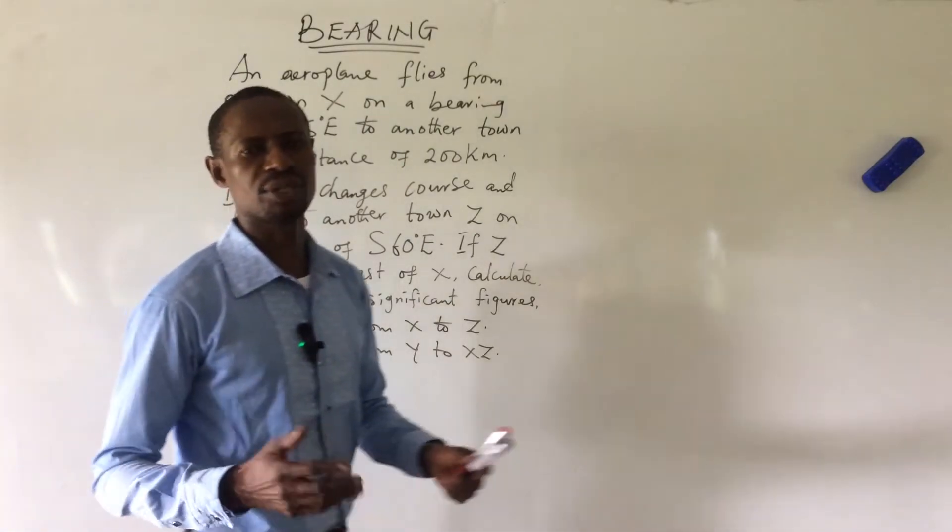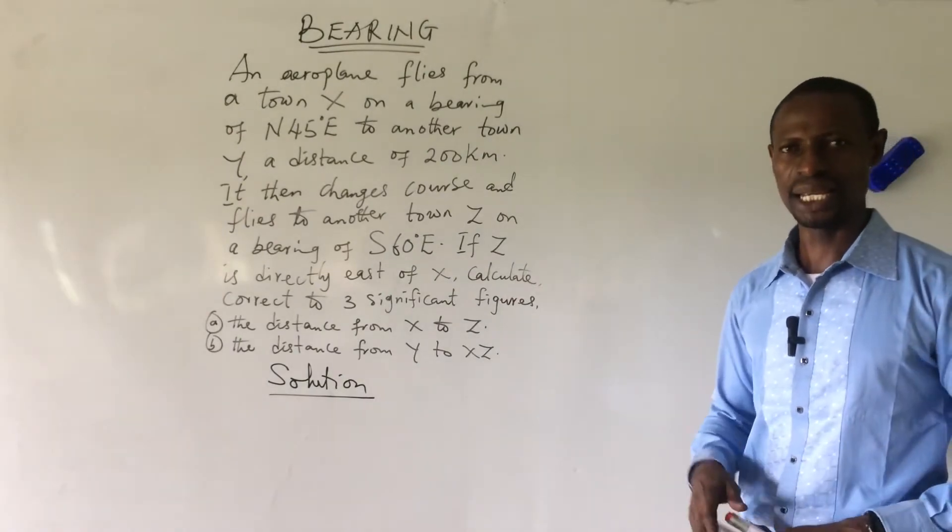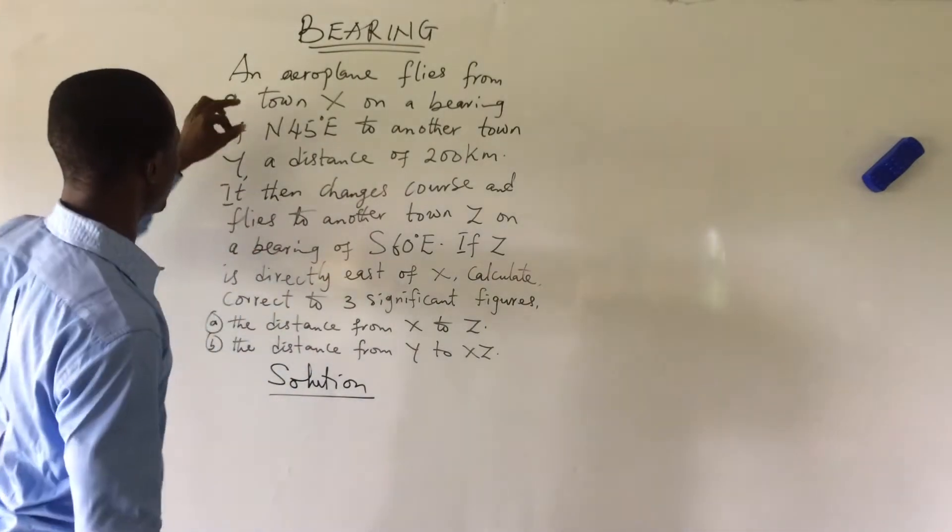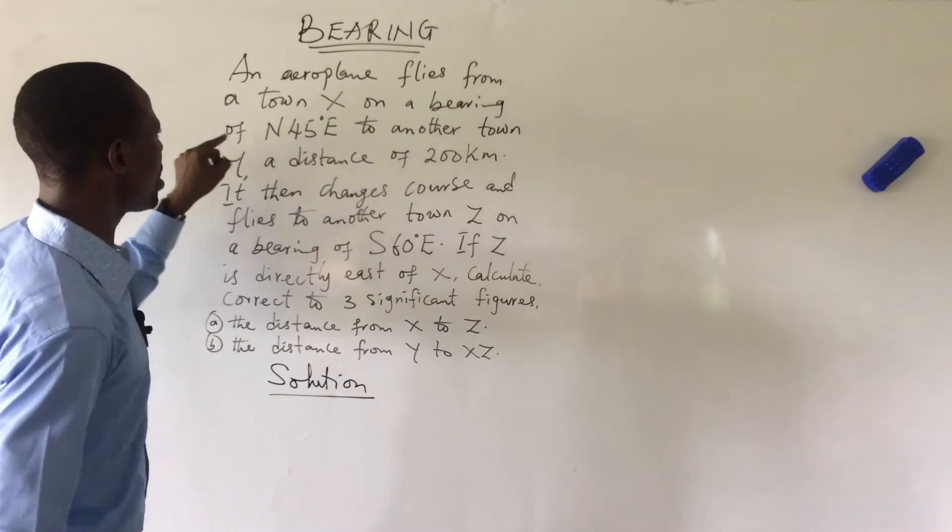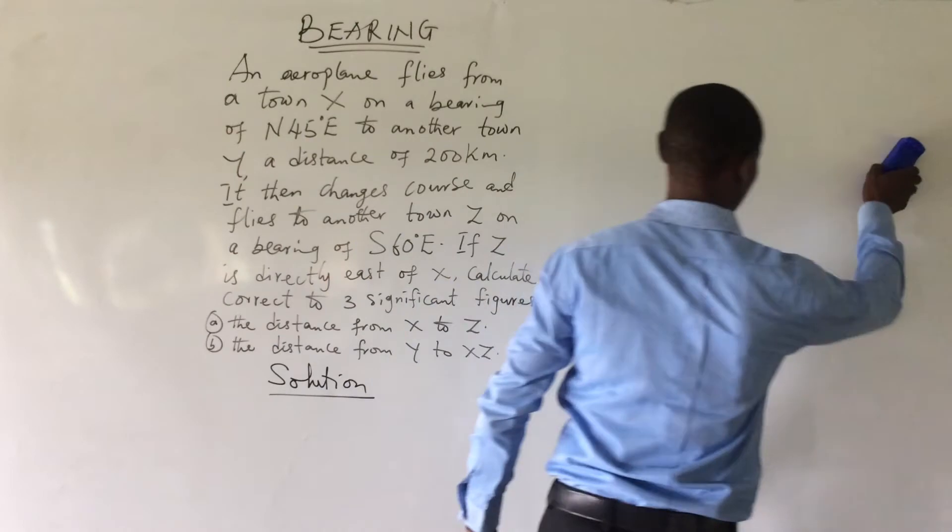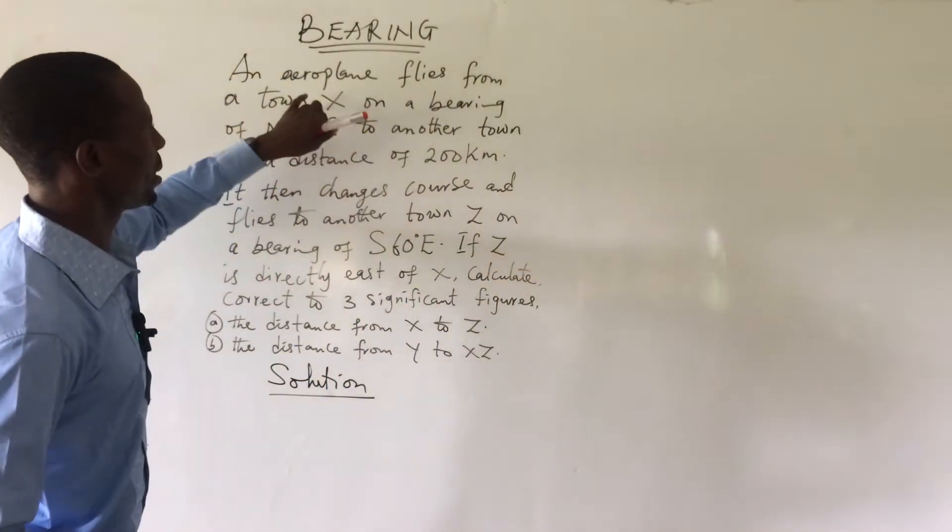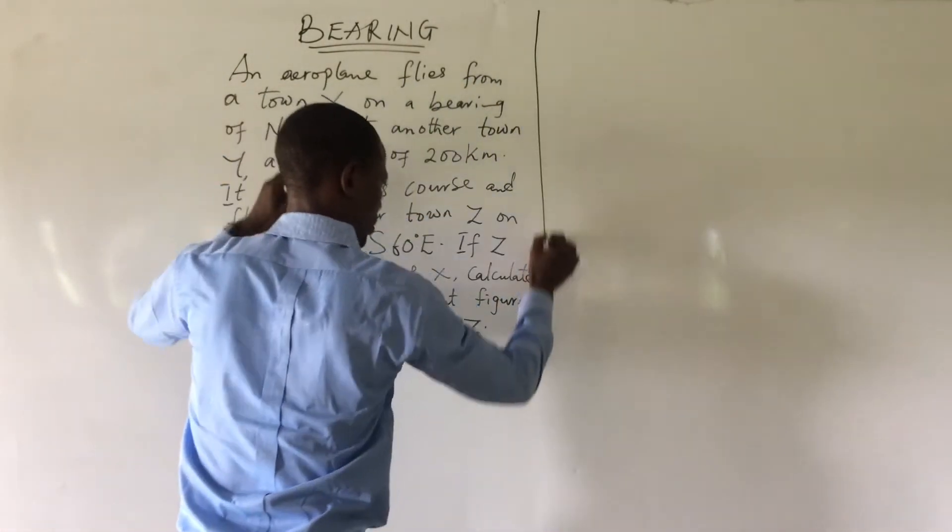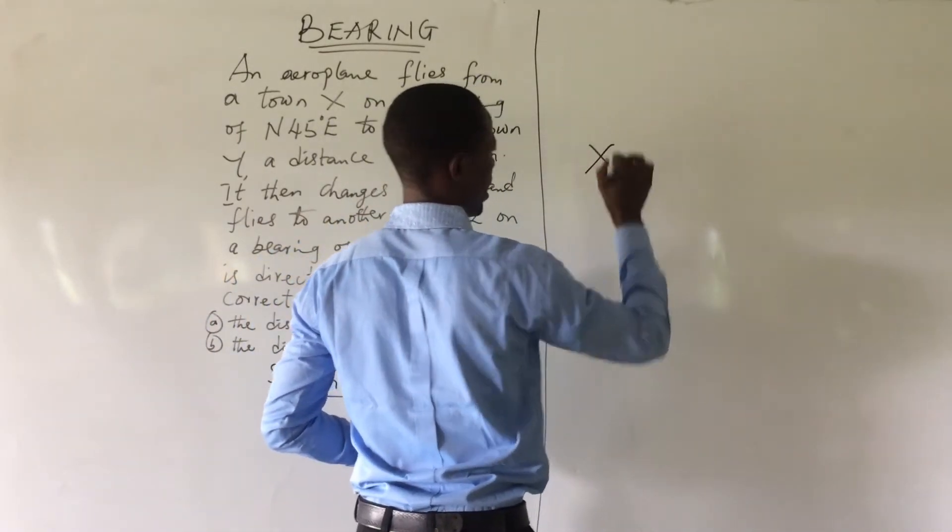The first thing we do here is to sketch our diagram and once we can get the perfect diagram, then the solving is made easy. We take the first sentence: an aeroplane flies from a town X on a bearing of 45 degrees northeast. We start our diagram. Let's take the town X as the starting point.